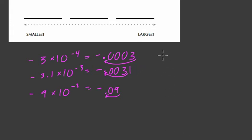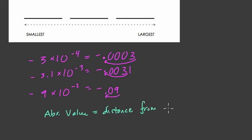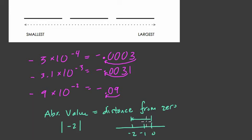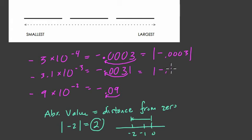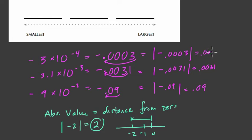Well, remember that absolute value is distance — that's your distance from 0. How far is a number from 0? That's always going to be positive. Think if you have the absolute value of negative 2. If we have a number line, here's 0, negative 1, negative 2. That distance is the absolute value, and that's two units. So the absolute value of negative 2 is 2 — that's the distance negative 2 is from 0. So if we look at the absolute value of negative 0.0003, then the absolute value of negative 0.0031, and finally the absolute value of negative 0.09, all we're going to get is three positive numbers: 0.0003, 0.0031, and 0.09.